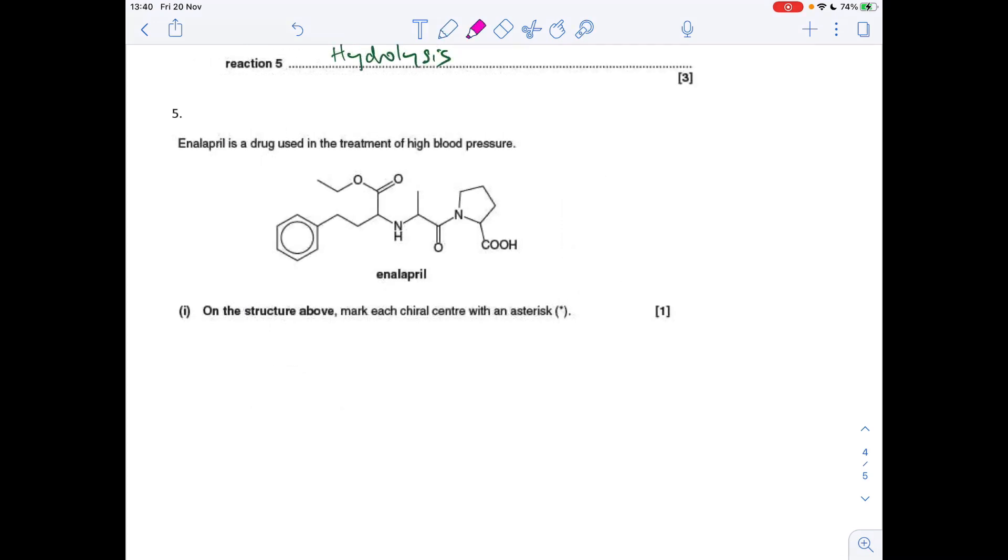And the final question, got to identify chiral centres again. I'll use an asterisk this time, I didn't last time, so apologies for that. We're looking for carbons with four different groups attached. We've got one there. We've got one there. And we've got one in the ring there. And we've got one in the ring there.